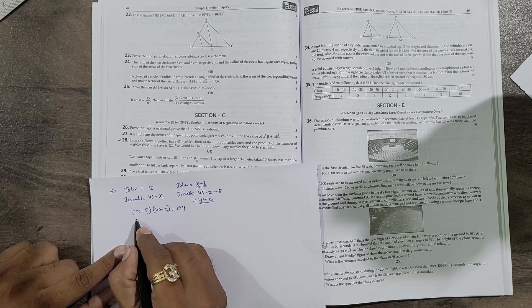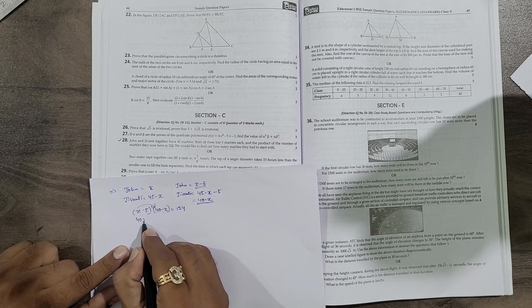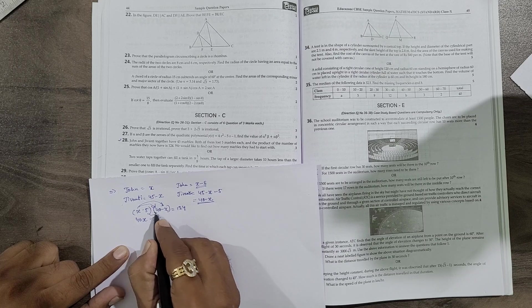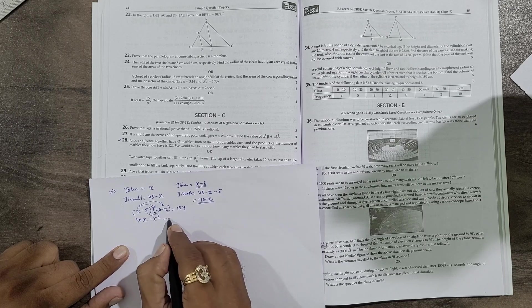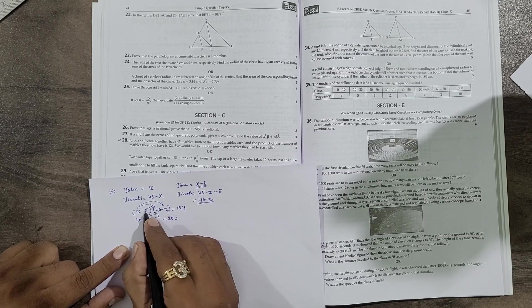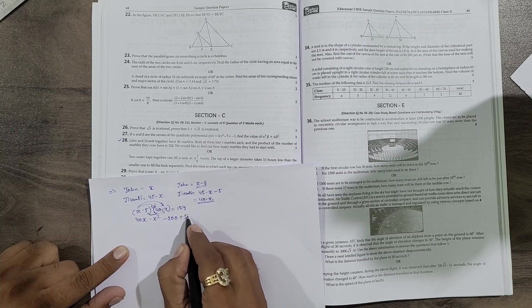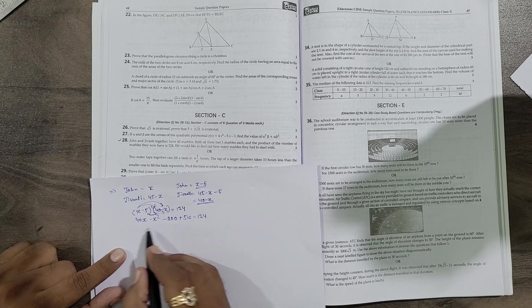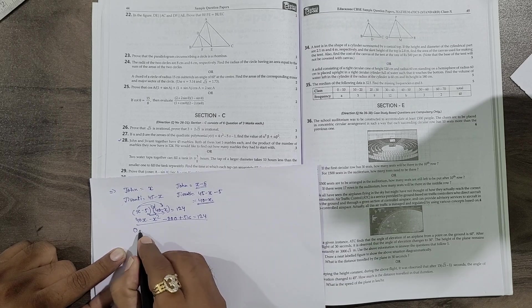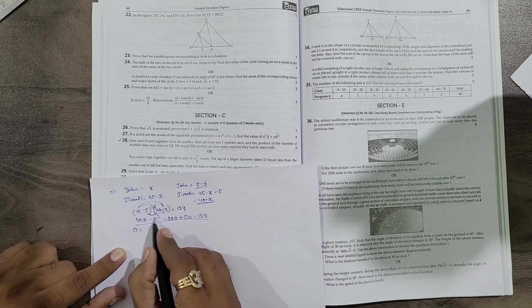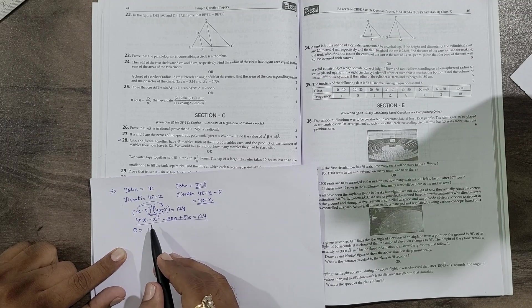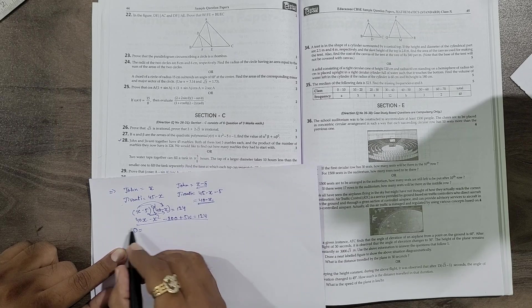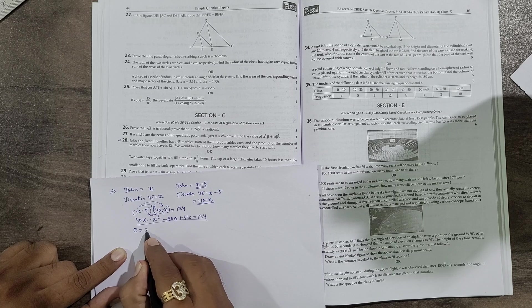So here we will get 40x, and then this will be minus x², and this will be minus 200, and this minus minus plus 5x equals to 124. Now we need to make an equation out of this. First of all, I am going to take 0 because this x² is negative. Always try to take this x² positive in any quadratic equation. Just try to change the side, so I will take this x² on that side so that will become positive.